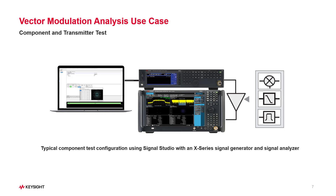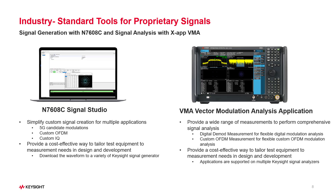It can be used to do component and transmitter testing. Characterize the power and modulation performance of your components and transmitters. You can use Signal Studio to create and customize waveforms to your DUT, then analyze the signal in the VMA application with Keysight Signal Analyzer. For customized non-standard signal creation, you can use Signal Studio for custom modulation, series number N7608. It covers custom IQ, custom OFDM, and 5G candidate modulation. Usually, Signal Studio for custom modulation and X-app VMA application are paired to use, providing a cost-effective way to tailor test equipment to measurement needs in design and development.